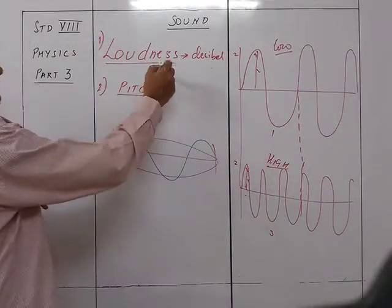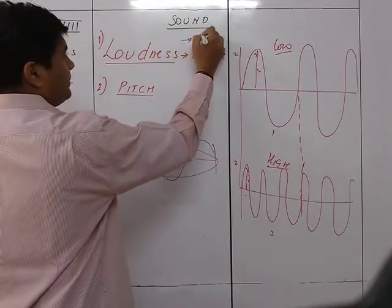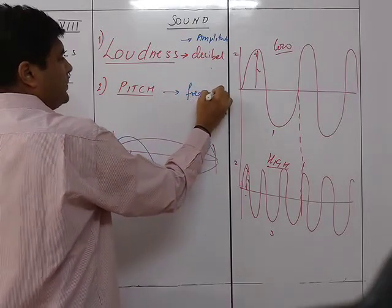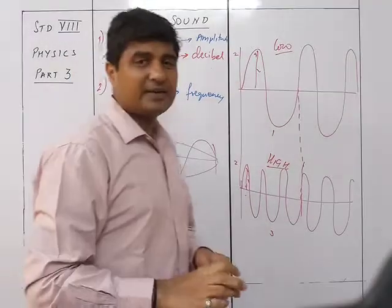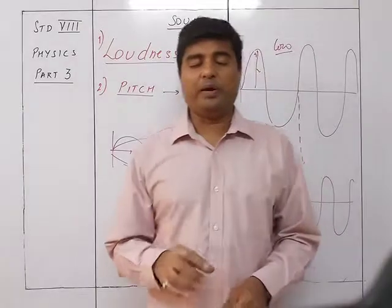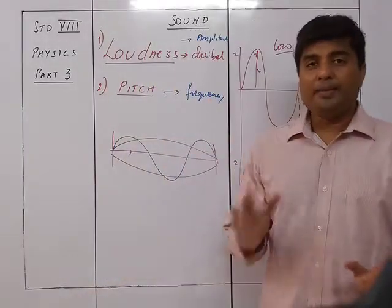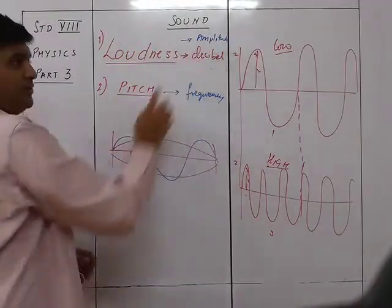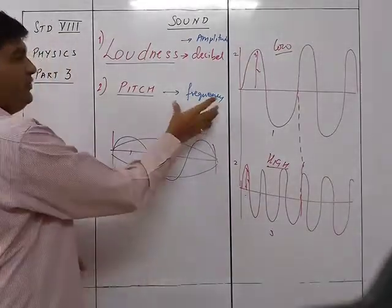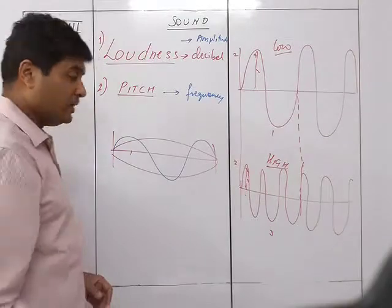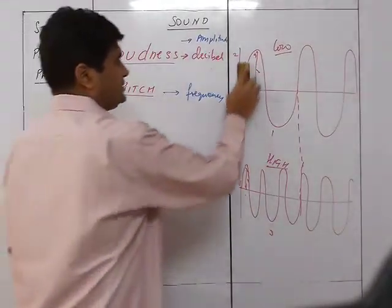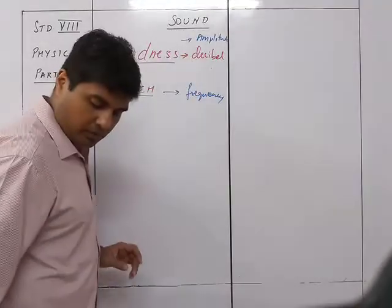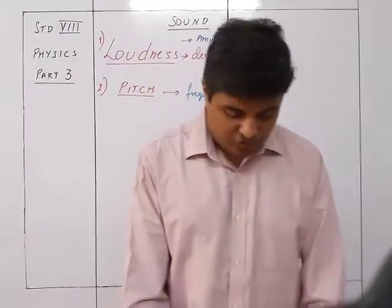To summarize: loudness is dependent on the amplitude of the wave, whereas pitch is dependent on the frequency. The amplitude of the wave gives the loudness characteristic of sound, and the frequency of the wave gives the pitch. The next characteristic — quality or timbre — will be covered in the next video.